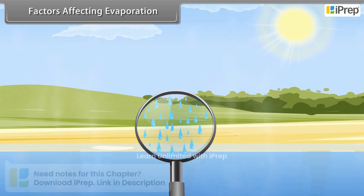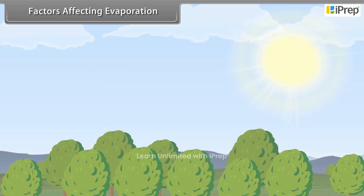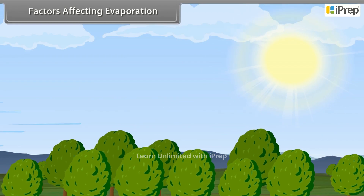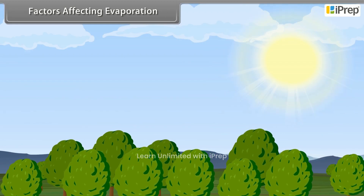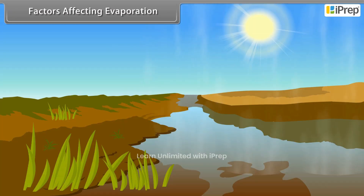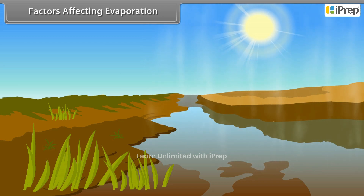Humidity is defined as the amount of water vapor present in the air. The air around us cannot hold more than a definite amount of water vapor at a given temperature. When the humidity of air is low, then the rate of evaporation is high and water evaporates more readily.